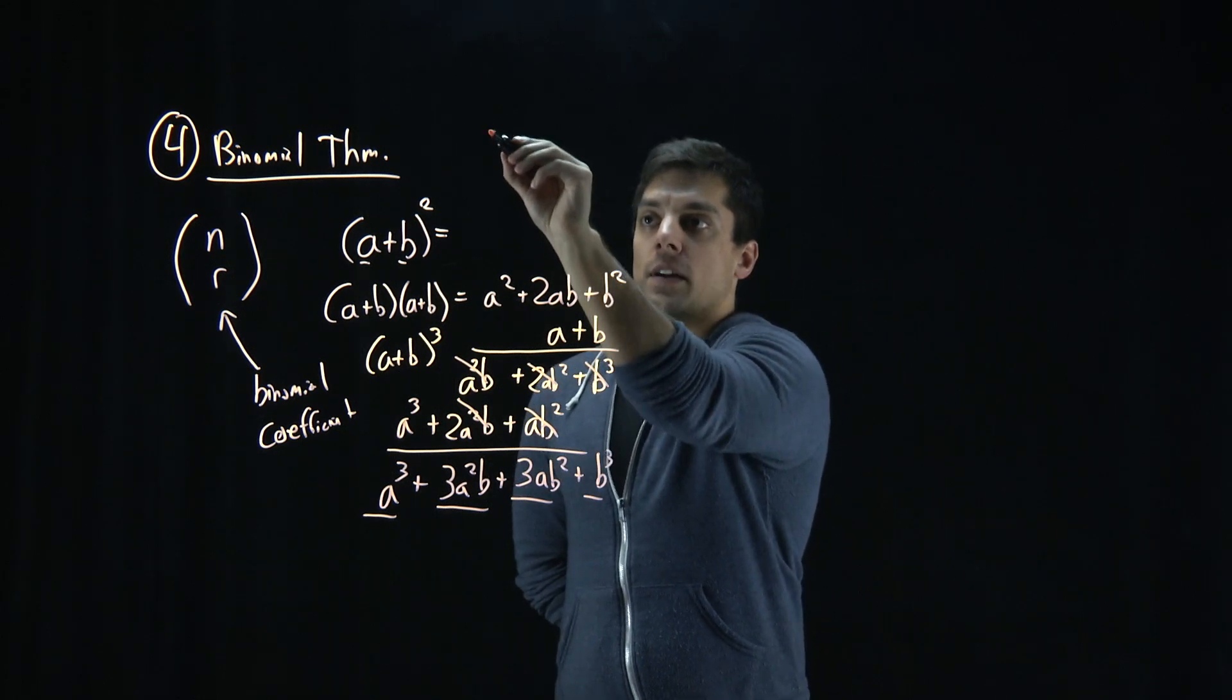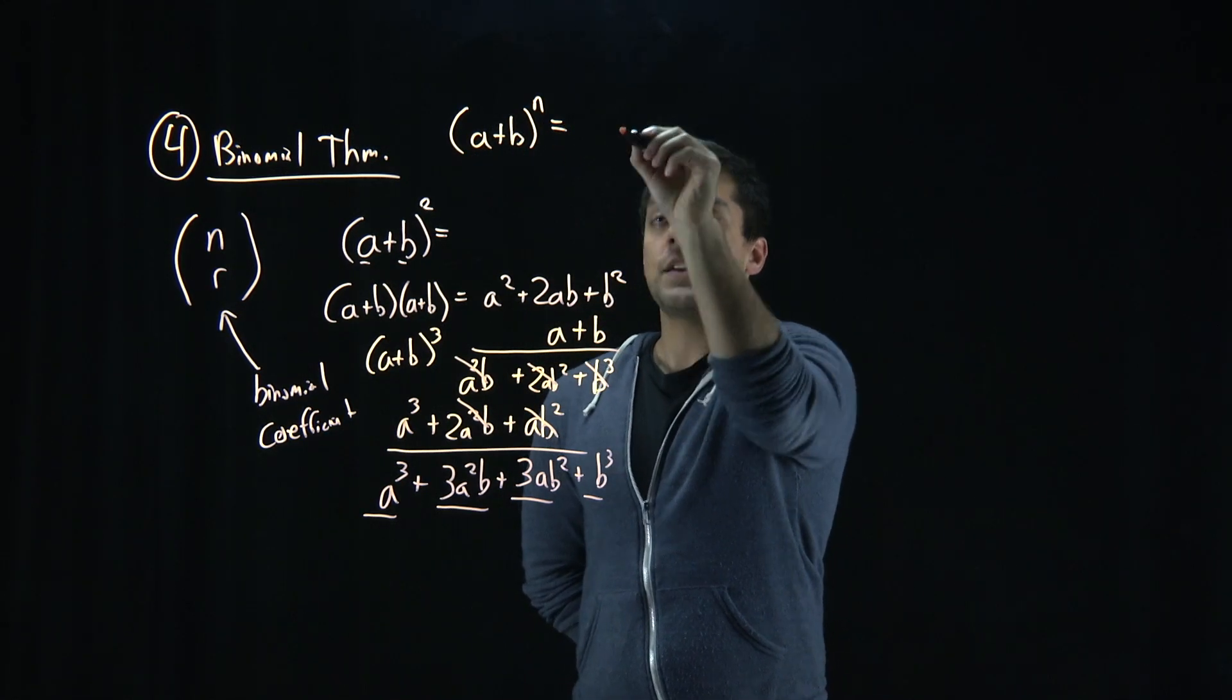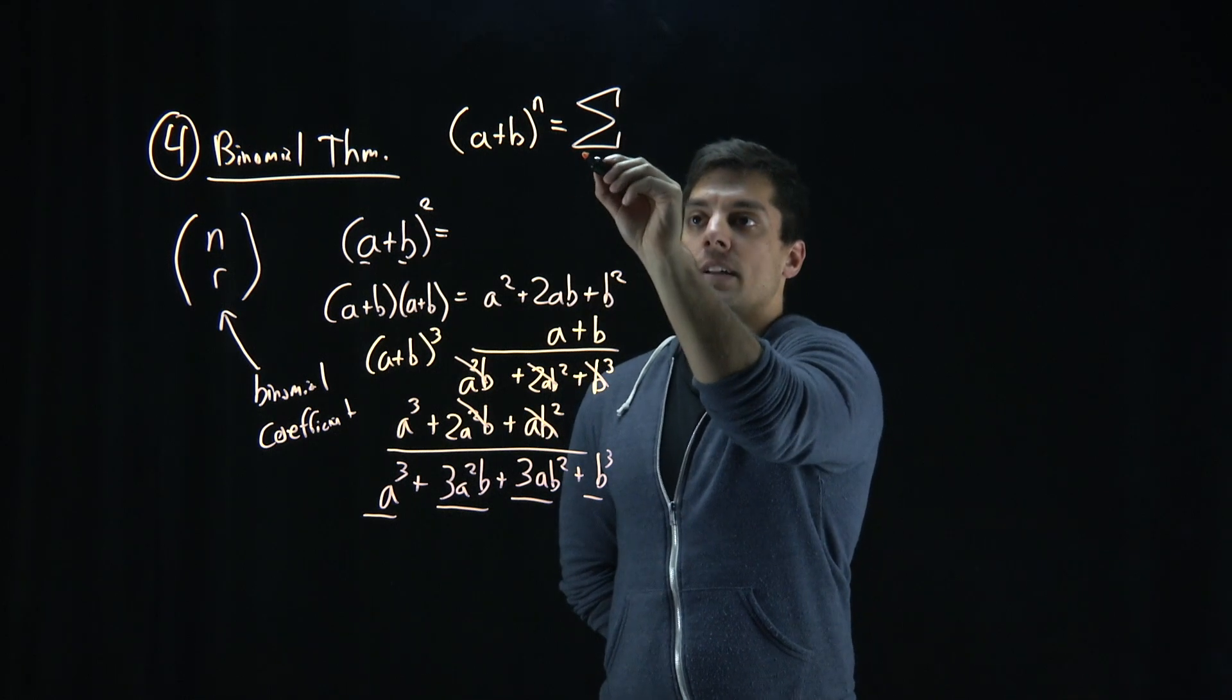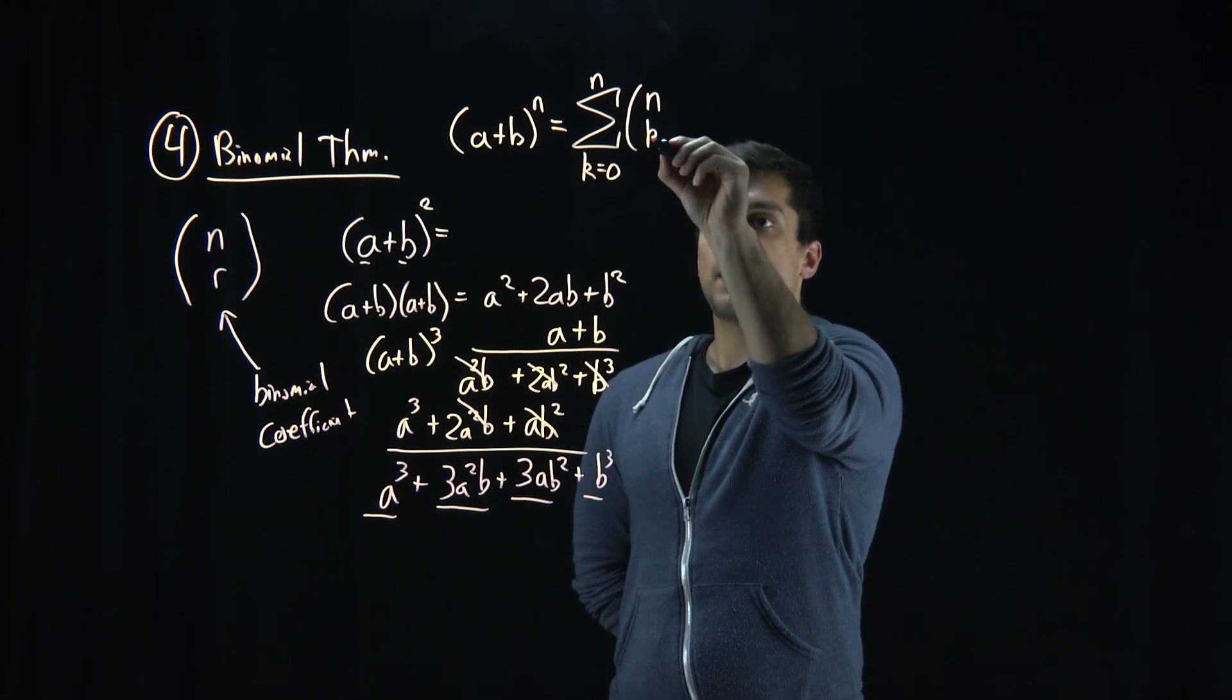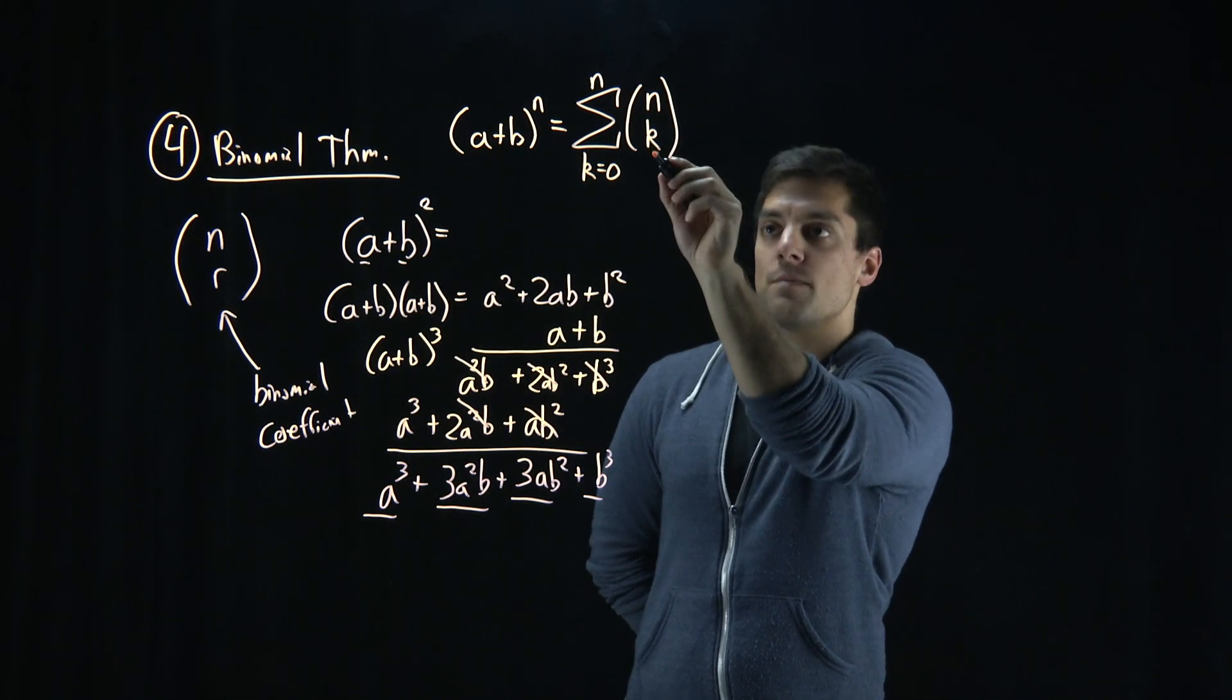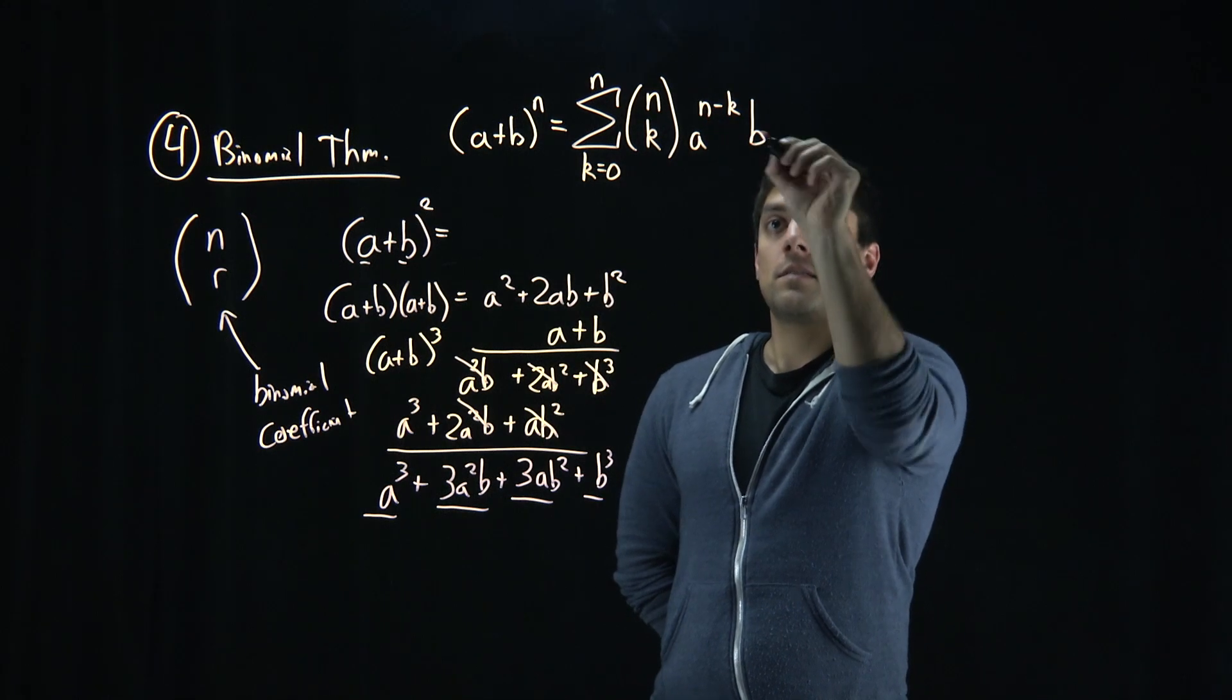So the binomial theorem: given a plus b raised to some power n is equal to the summation from some value, let's say k equals 0 to n, of n choose k, what we've previously learned. This is often written as k, but r will be alright as well, times a to the n minus k times b to the k.